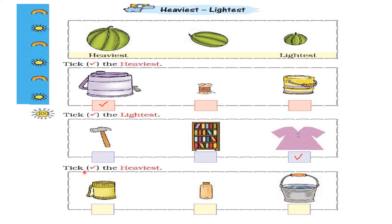Now again tick the heaviest — we have to find out which is heaviest. Here we are comparing this bucket of water with this small bottle and a small lunch box. Which is the heaviest? This bucket of water is the heaviest because it contains water and is heavy to carry, so I will put a tick mark inside this box.